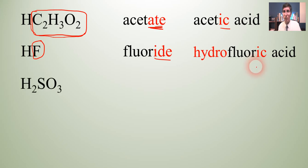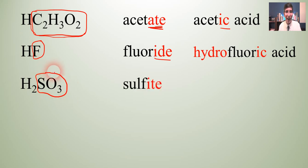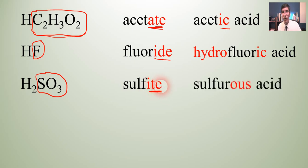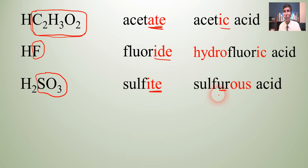Take a look at H2SO3. The SO3 is what we're looking at, and we know that is called the sulfite ion. So we drop the '-ite' and put '-ous' on the end — O-U-S. We might expect it to become sulfous acid, but it's actually sulfurous acid. For sulfur and phosphorus-containing acids, they throw that extra syllable in there, so it's sulfurous acid.